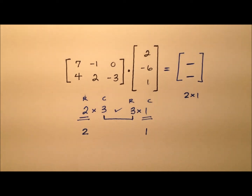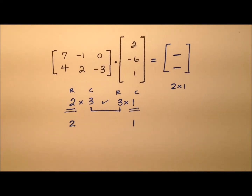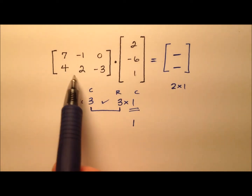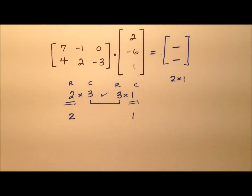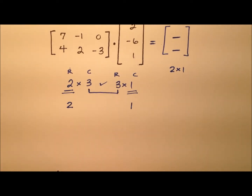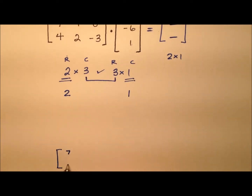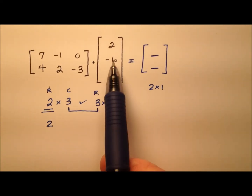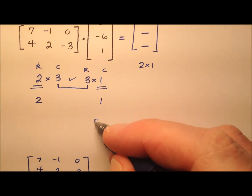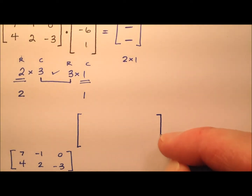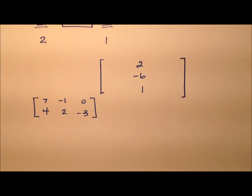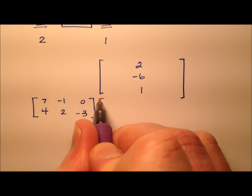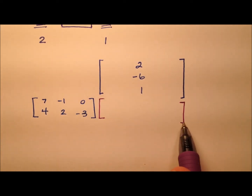So how are we going to put these matrices together to multiply them? I'm going to rewrite this problem in a way that helps you visualize what we're doing. I'll copy the first matrix down here, with values seven, four, negative one, two, zero, and negative three. And the second matrix — this column matrix with entries two, negative six, and one — I'm going to raise up and put here, leaving plenty of horizontal space. And right in between, I'll put our product matrix.